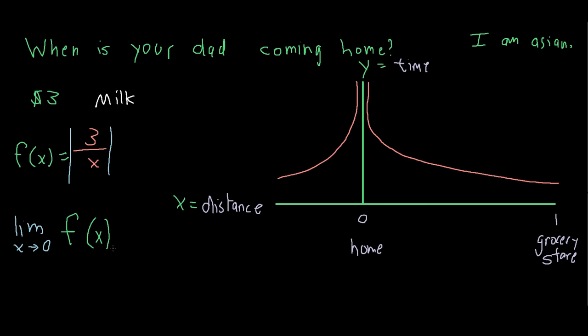Basically, as the x value approaches 0, what value does the y value approach? As you can see on our graph, the y value, or time it takes until your dad gets home, approaches infinity.